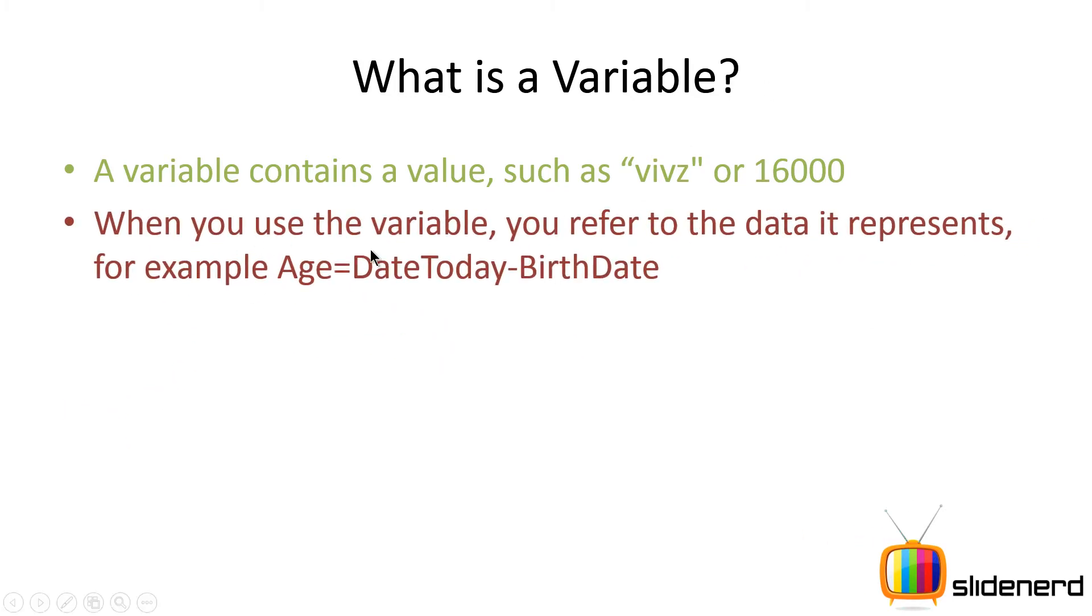When you use the variable, you refer to the data it contains. For example, you can say age equals date today minus birth date. Your JavaScript interpreter is going to get the value of date today, which is something that you see on your calendar right now, get your birth date, subtract both of them, and store that value or the result of subtraction inside age.